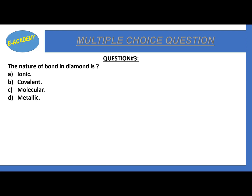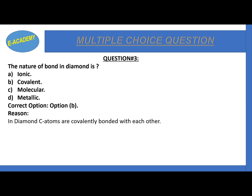Question number 3: The nature of bond in diamond is ionic, covalent, molecular or metallic? The correct option is B: covalent. The reason is that carbon atoms in diamond are covalently bonded with each other.